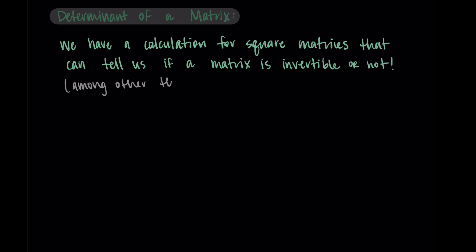The determinant has other uses and applications, but this is just one of the reasons we like having this computation, which we call the determinant. How the determinant relates to a matrix having an inverse is a topic covered in a separate video. For now, we're just going to focus on how we find the determinant, but I want you to know that the reason we're talking about this at all is because it has a relationship with finding the inverse of a matrix.